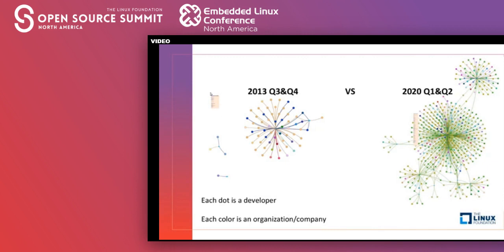There is a clear evolution over those seven years. Uber has released a large number of open source projects, and we can see how we had a few companies interested in the technology at the beginning. Nowadays, what this means for Uber — collaboration — is that each color represents different corporations participating in the development. We were moving from roughly 10 to 20 organizations to around 70 to 80 organizations. This is collaboration in Uber today.